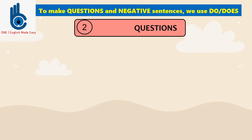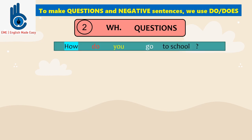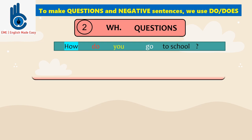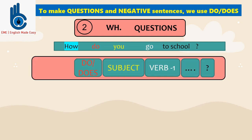Second, we are going to see how to make WH questions — questions that have a question word. Kalimat tanya yang menggunakan WH word, atau kata tanya. In the previous dialogue, we can hear: how do you go to school? Actually, to make a WH question, we use the same pattern: do or does, followed by subject, followed by verb one, question mark.